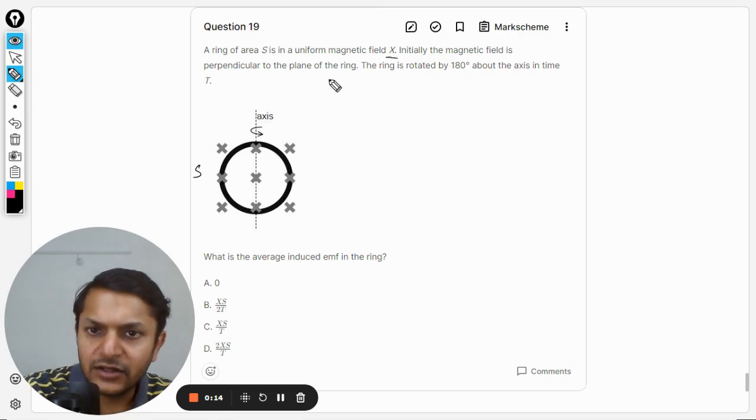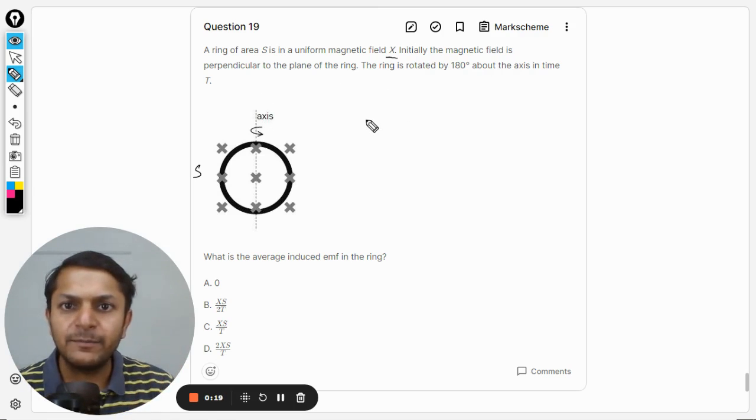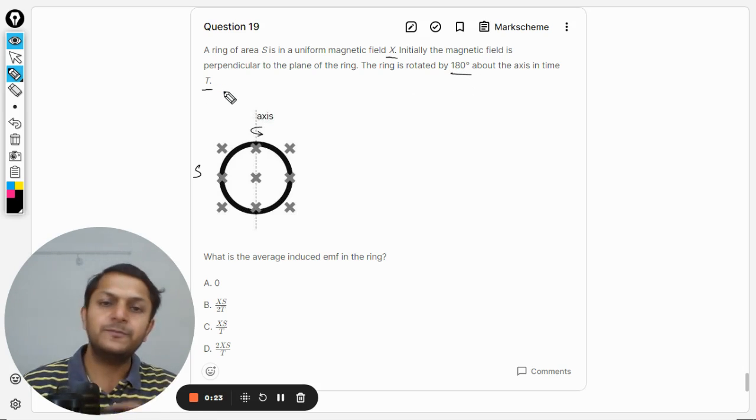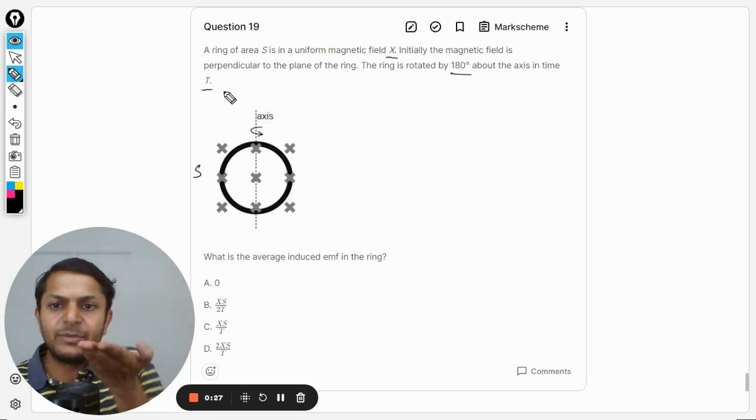So initially it is just placed the way it is shown in the diagram. The ring is rotated by 180 degrees in the total time T, so in total time T the ring is now flipping itself completely.